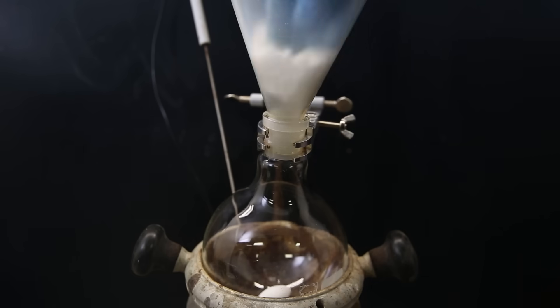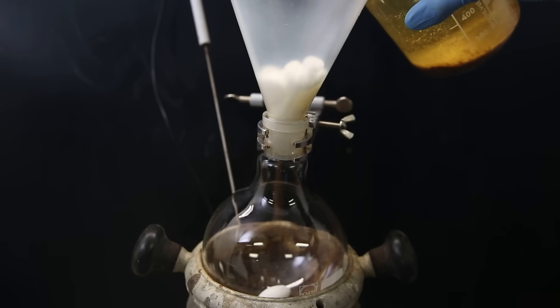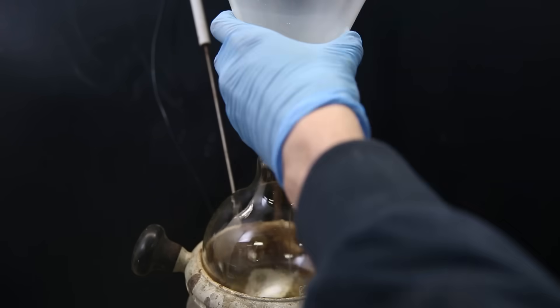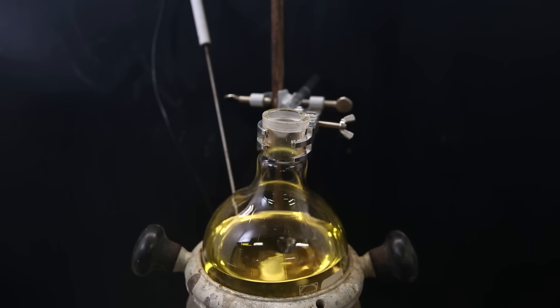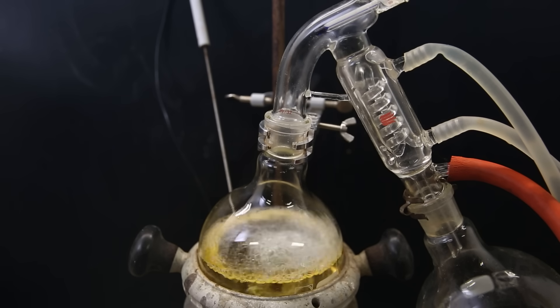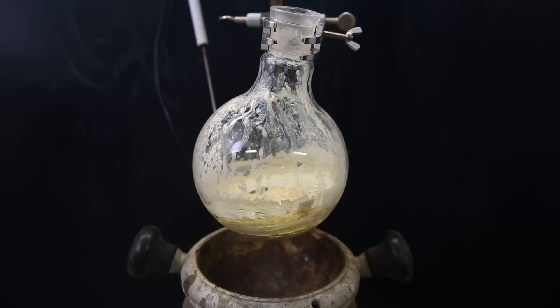When that looks good I filter this through some cotton directly into a flask to remove the sodium sulfate again, giving a transparent yellow solution that contains the product. I set it up for short path vacuum distillation to remove all of the solvent, giving the product as a light yellow solid.